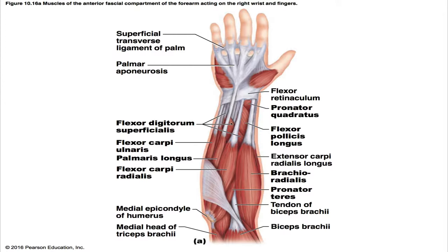The flexor digitorum superficialis is a two-headed muscle more deeply placed, overlaid by muscles above but visible at the distal end of the forearm. Its origin is the medial epicondyle of the humerus, the coronoid process of the ulna, and the shaft of the radius. Its insertion is by four tendons into the middle phalanges of fingers 2, 3, 4, and 5. It is innervated by the median nerve. Its prime action is to flex the wrist and middle phalanges of fingers 2 through 5, and it is an important finger flexor when speed and flexion against resistance are required.